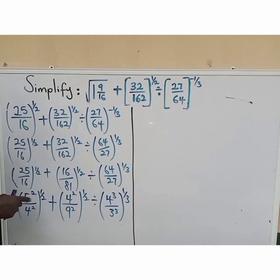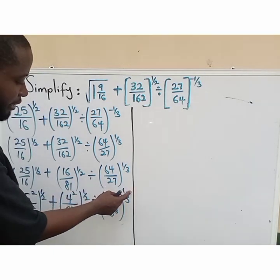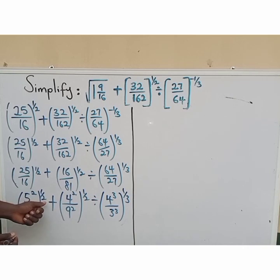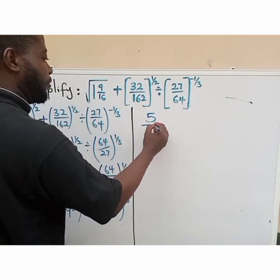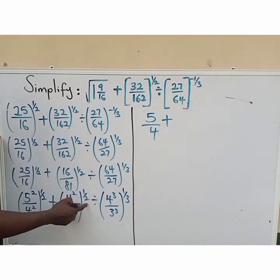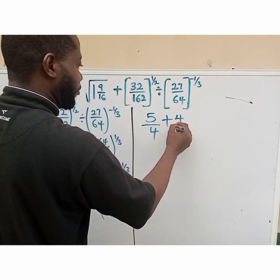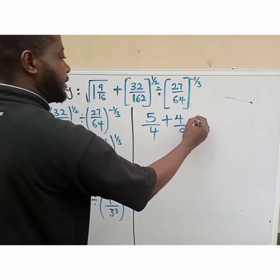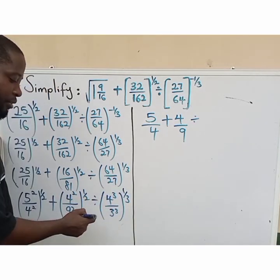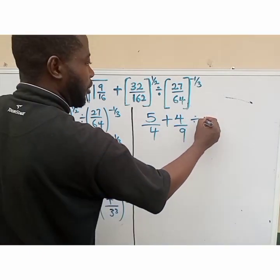The next thing — don't forget, the power of 1 over 2 and the power of 1 over 3 are applicable to both the numerator and the denominator inside the brackets. So 2 multiplied by 1 over 2 is 1, giving us 5 over 4. Similarly 2 multiplied by 1 over 2 is 1, giving us 4 over 9. And 3 multiplied by 1 over 3 is also 1, giving us 4 over 3.